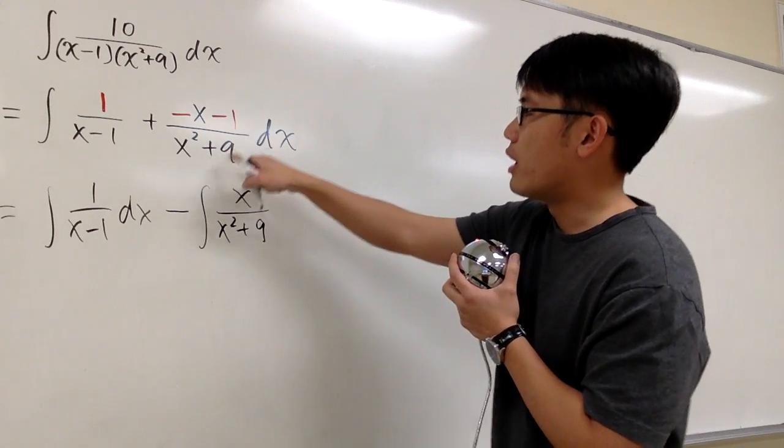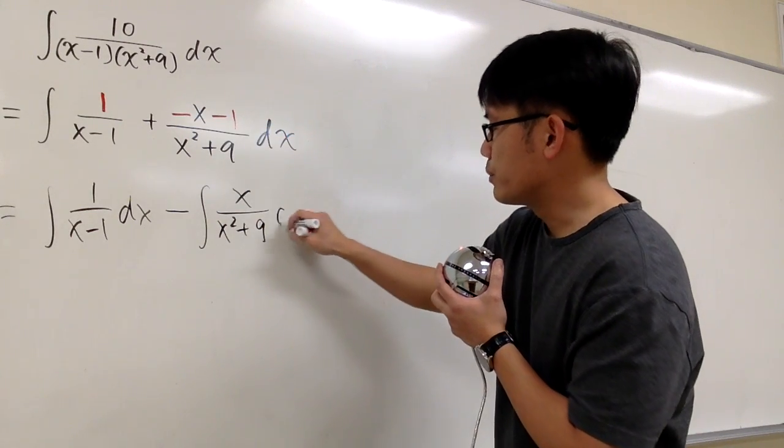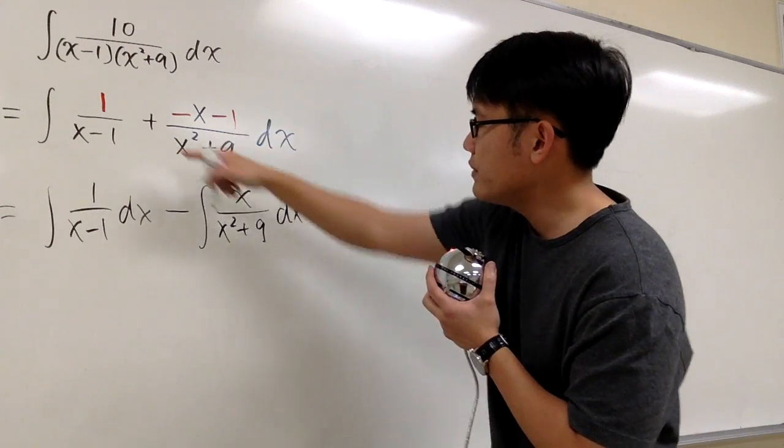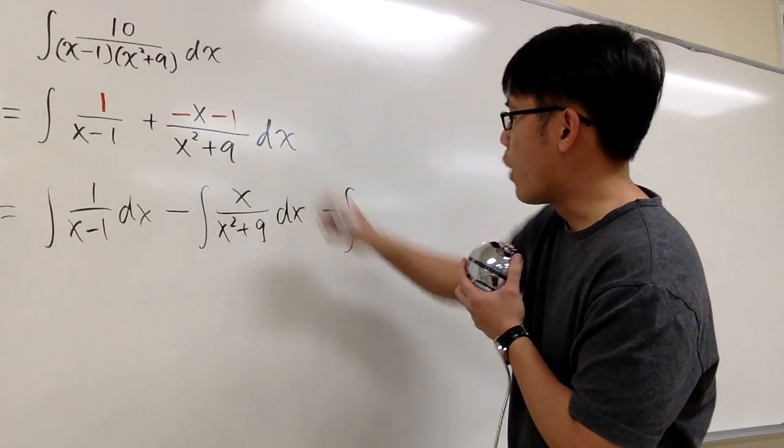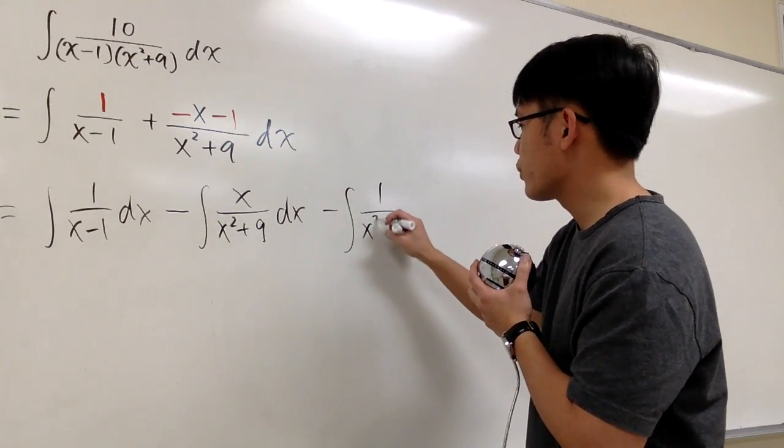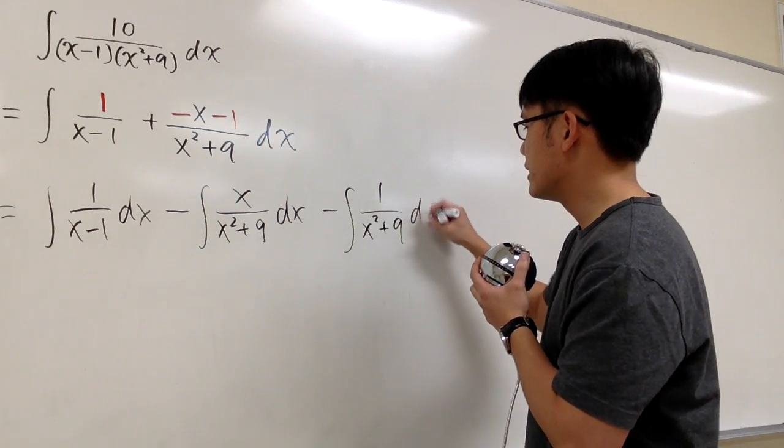And then for the last part, take out the negative. Put on dx first, so the last integral is negative. Integral 1 over x squared plus 9 dx.